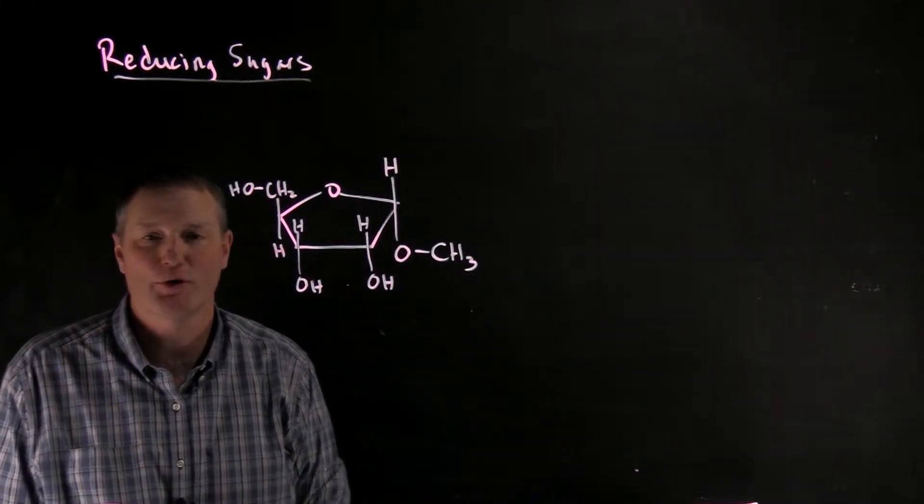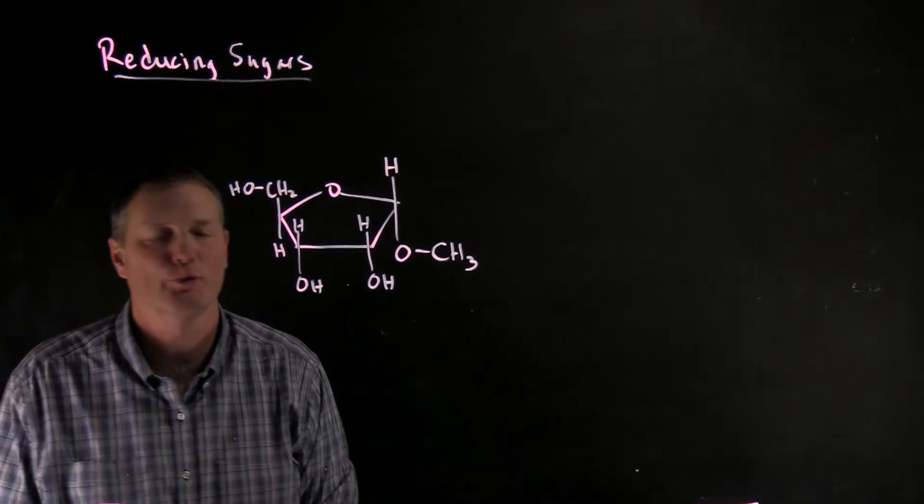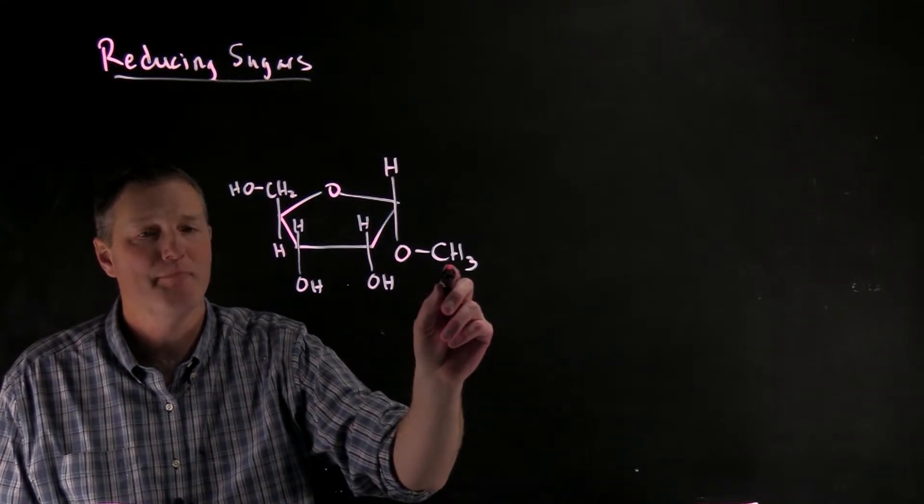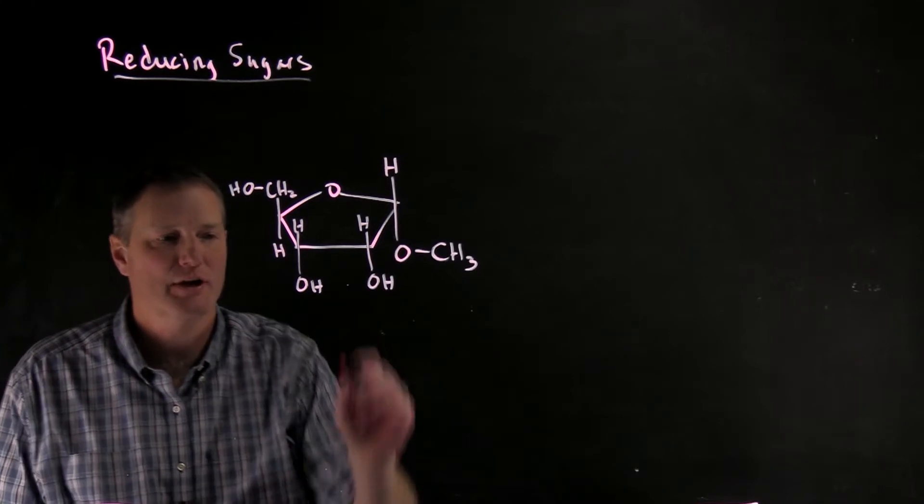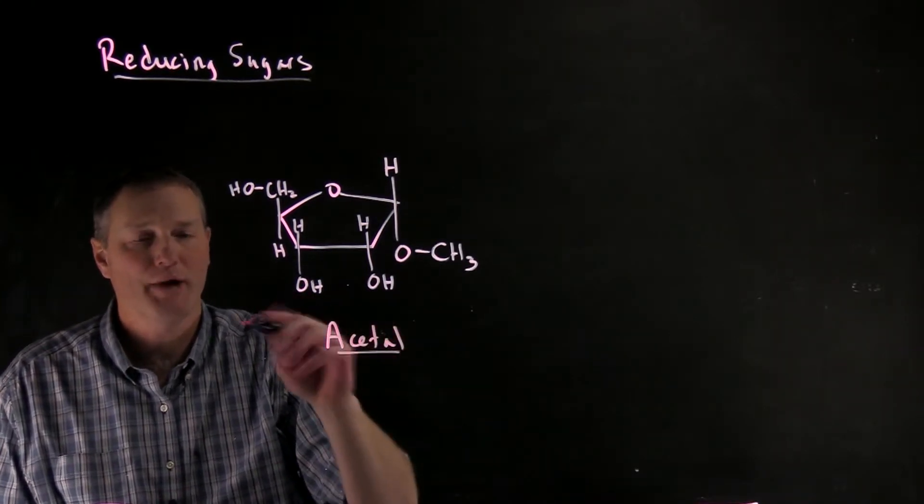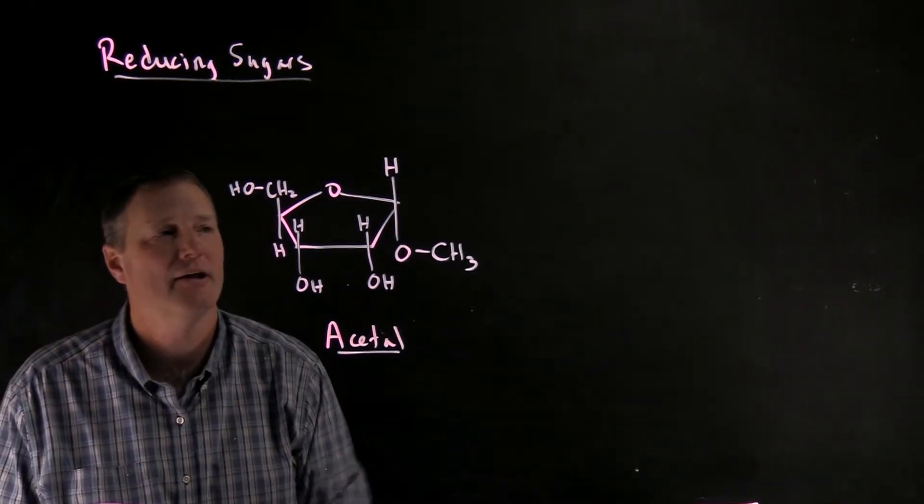So what I've drawn here is sort of a blocked structure of our molecule ribose. So notice I've changed that OH group now to a methyl group. So this is like a methyl ether. Technically this is called an acetal. Recall that the prior structure with just an OH here was called a hemiacetal. This is now a full acetal.